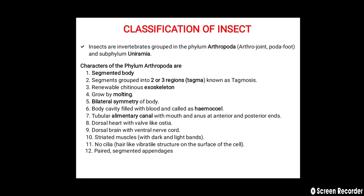Now let us start today's topic: classification of insects. Insects are invertebrates grouped in the phylum Arthropoda. The meaning of Arthropoda is 'arthros' means joint and 'poda' means foot or leg. This belongs to the sub-phylum Uniramia.